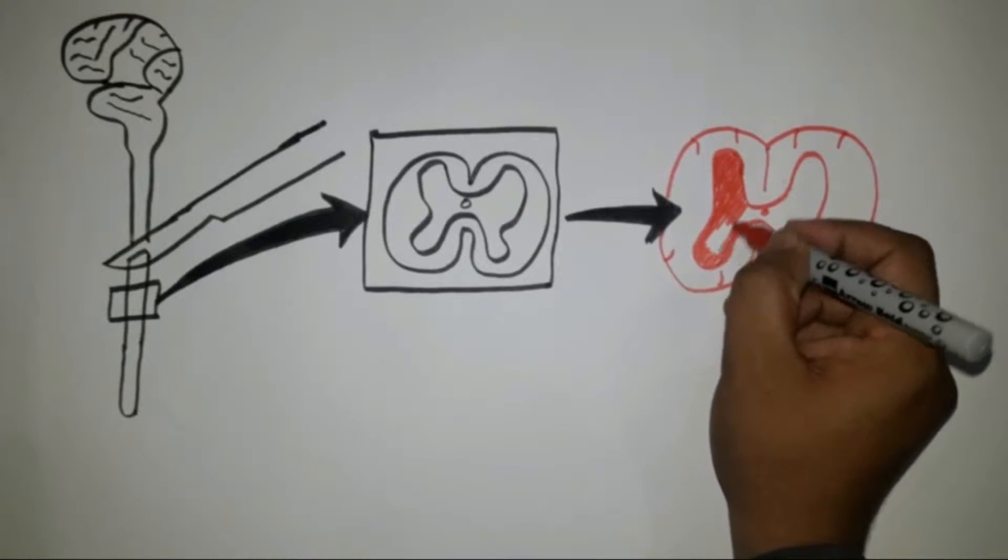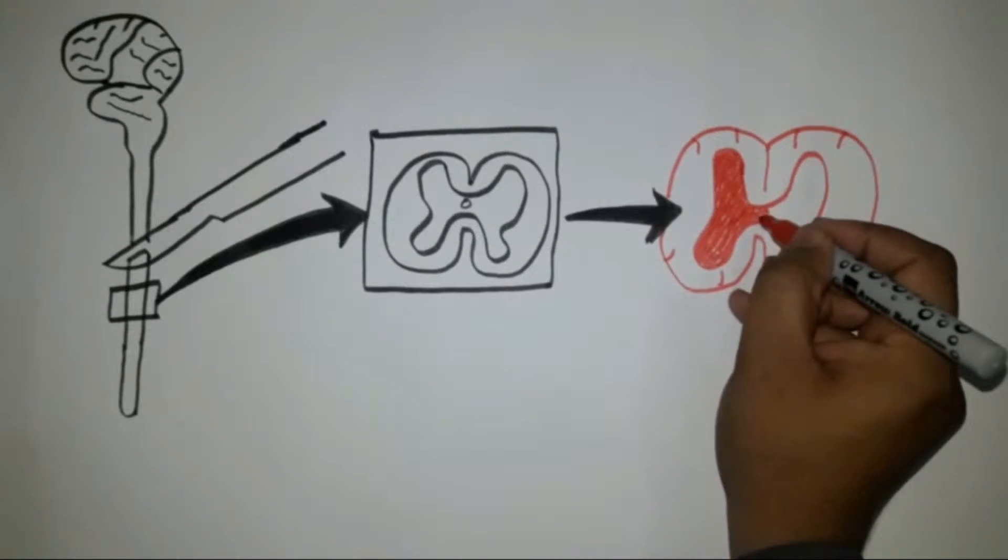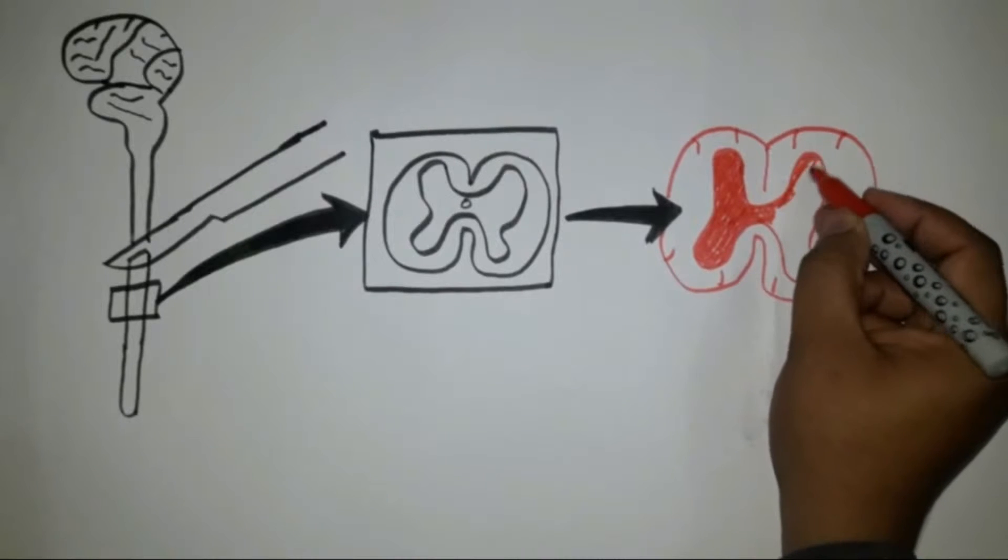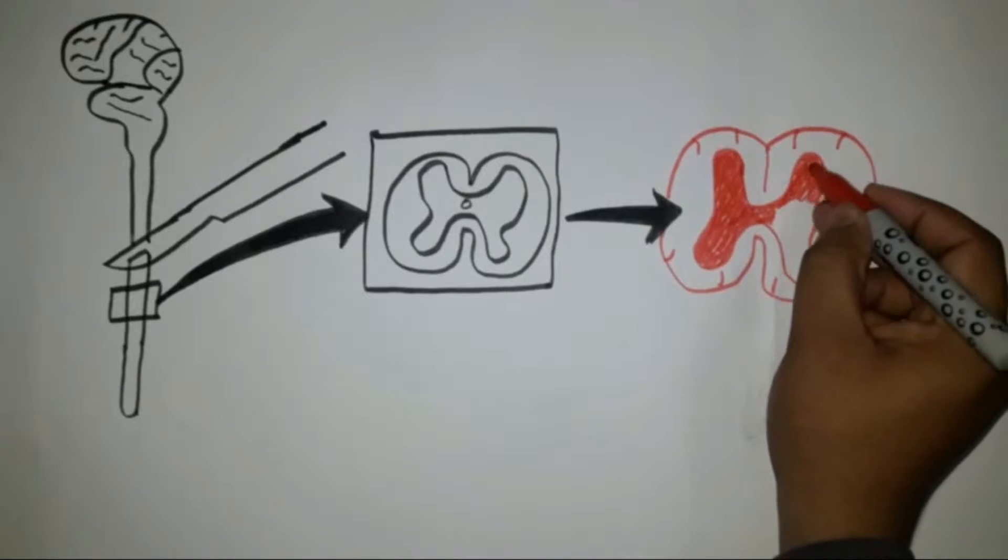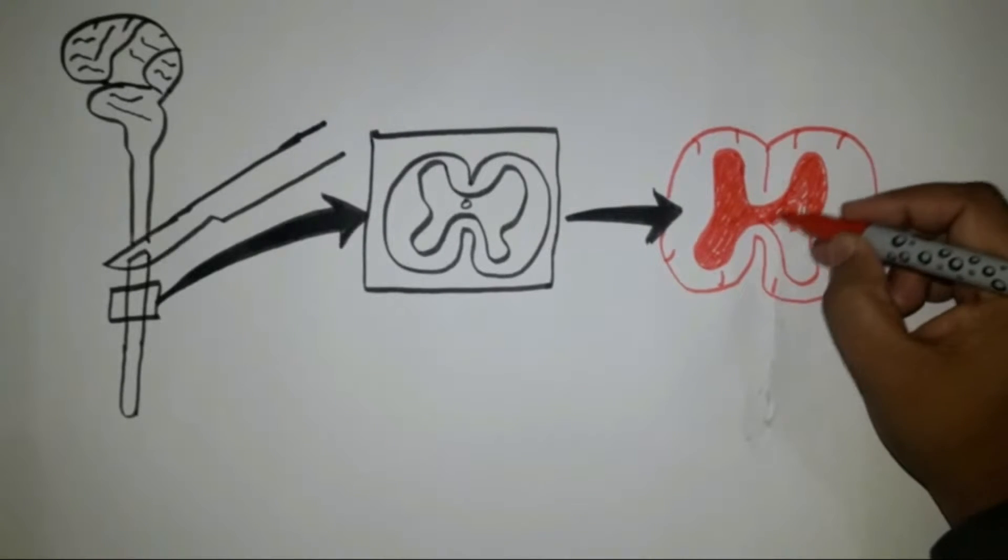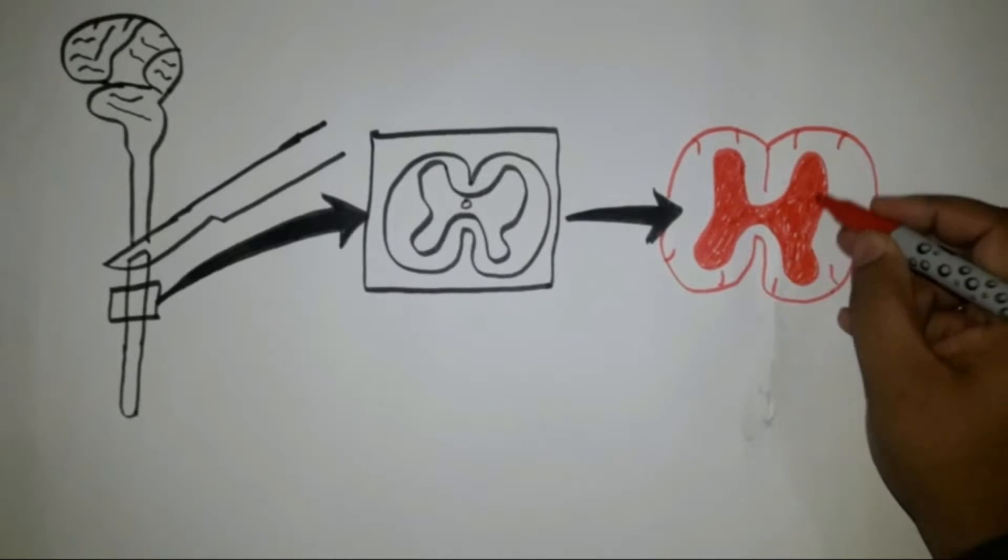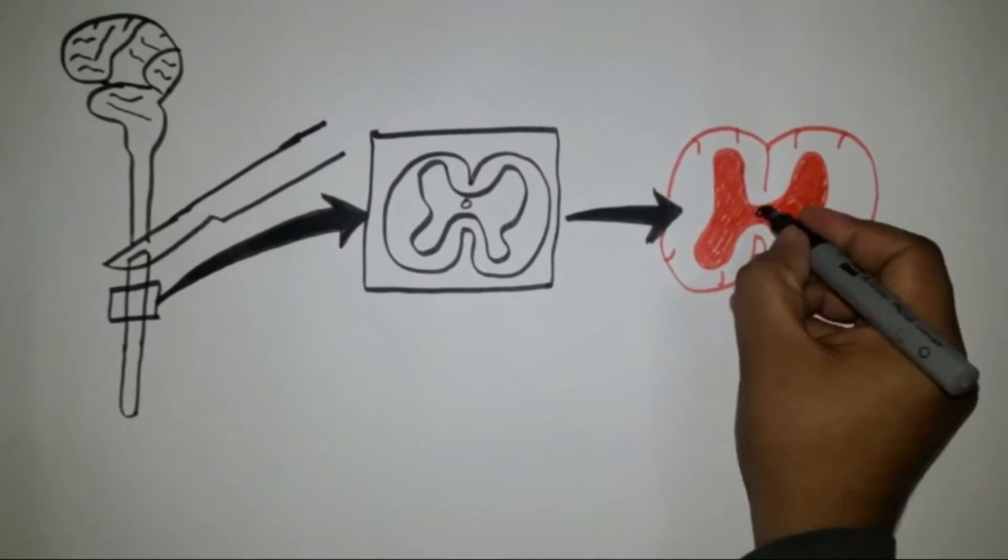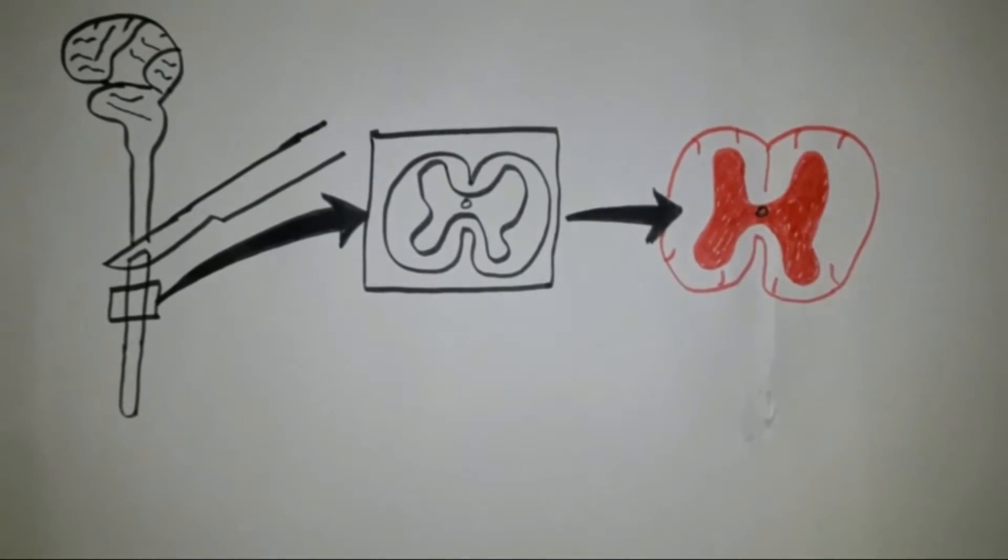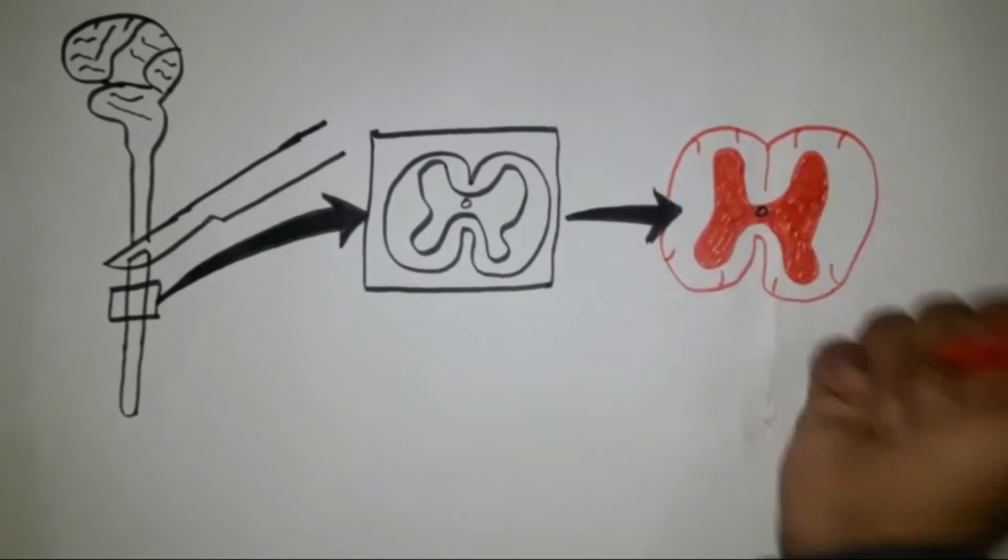Central canal is lined by single layer of columnar cells known as ependymal cells. And in this canal also present CSF.